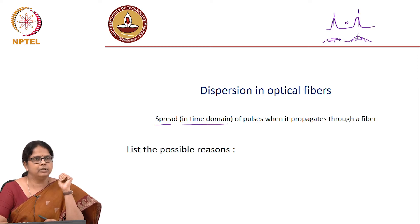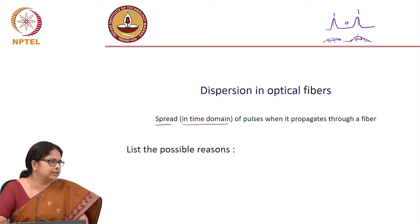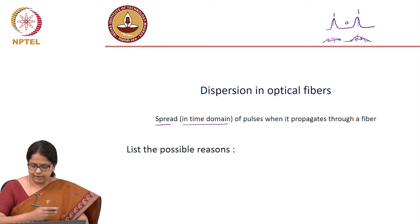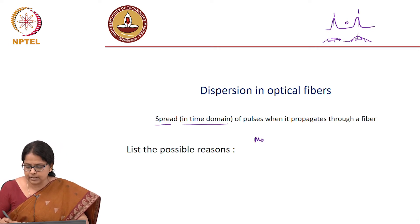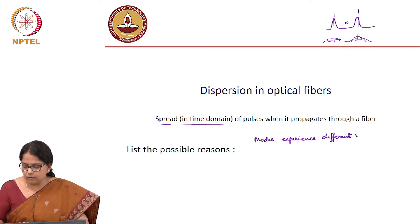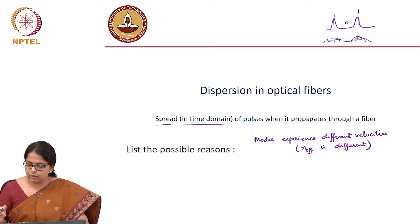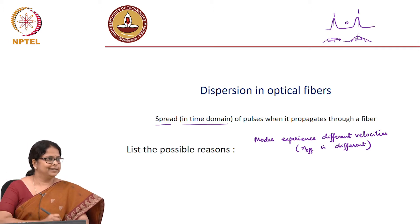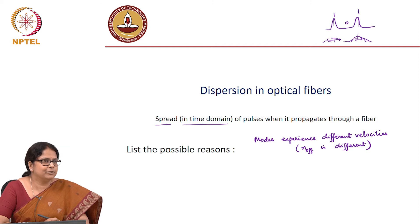What are the possible reasons that will result in the broadening of the pulse? Different velocities of the modes - one possible reason is that modes experience different velocities. Why do they experience different velocities? Because n_effective is different. You have told the most non-intuitive reason for dispersion, though it is intuitive now because we just finished n_effective.